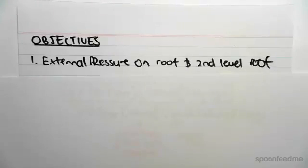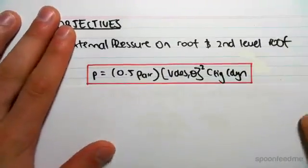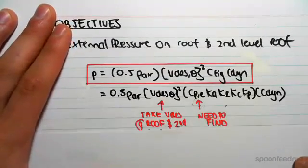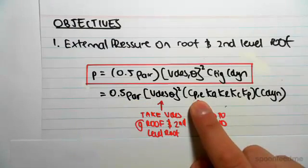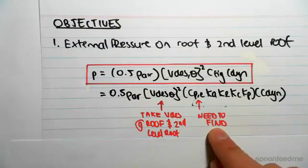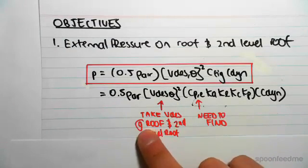So the pressure formula is the exact same as we've seen in all previous videos, just expanding it out. What we're going to be needing to find—all these values are the same—we just need to find CPE. We need to find that, and then for vdes theta we need to take vdes at the roof and second level roof.